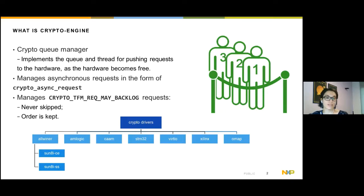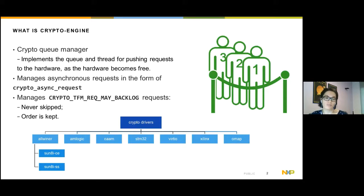The block layer, on the other hand, should always use the backlog flag and stop sending more requests to the crypto API until the congestion goes away. So CryptoEngine queues the request for later execution — it doesn't drop it. It also keeps the order of requests, which is one important aspect for the DMCrypt use case. In the kernel, there are already a lot of drivers that use CryptoEngine.